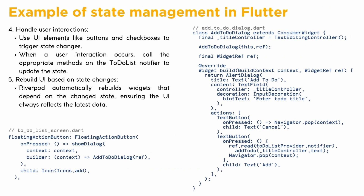Step 4 — handle user interactions. Use UI elements like buttons and checkboxes to trigger state changes. When a user interaction occurs, call the appropriate methods on the ToDoList notifier to update the state. Step 5 — rebuild the UI based on state changes. RiverPod automatically rebuilds widgets that depend on the changed state, ensuring the UI always reflects the latest data.